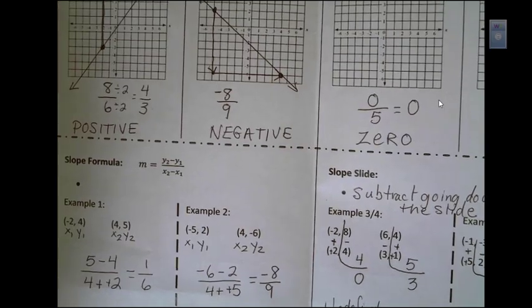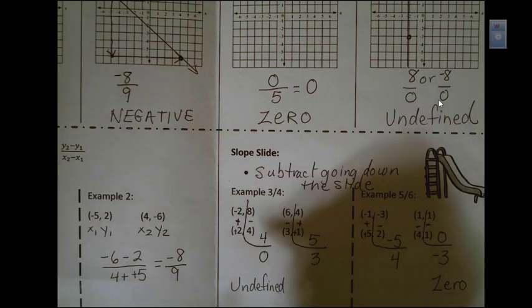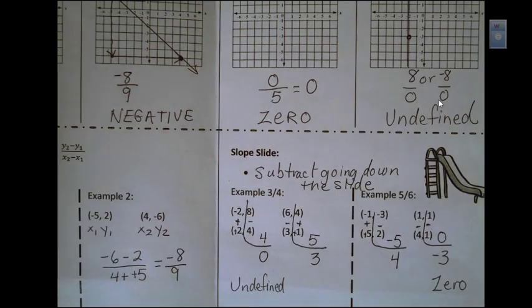So you choose which method you want when you're given two points. You can either use the formula or put the points right on top of each other and try to use slope slide. So whichever method you prefer.